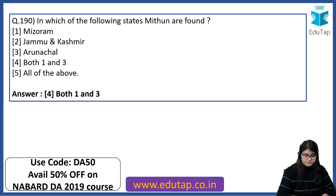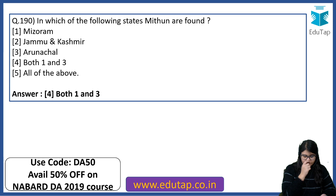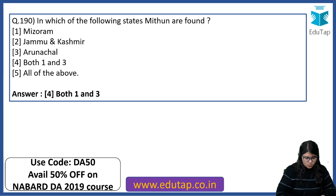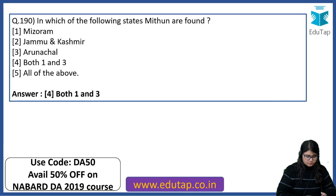With this we have completed some important questions — nearly 190, of which some 10-12 were not needed, so about 180 questions have been revised. These are important for your general awareness section that will be in tomorrow's paper, with special focus on agriculture and rural development. Mithun is a bovine species found mostly in the northeastern states — it is a gaur species.